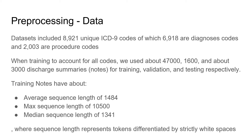Our data includes about 9,000 unique ICD-9 codes — about 7,000 diagnosis codes and 2,000 procedure codes. For training, we use about 47,000, 1,600, and 3,000 discharge summaries for training, validation, and testing respectively. The training notes have an average sequence length of about 1,400, a max sequence length of about 10,000, and a median sequence length of about 1,300. Sequence length represents tokens delimited strictly by white spaces, which will be important in later slides.